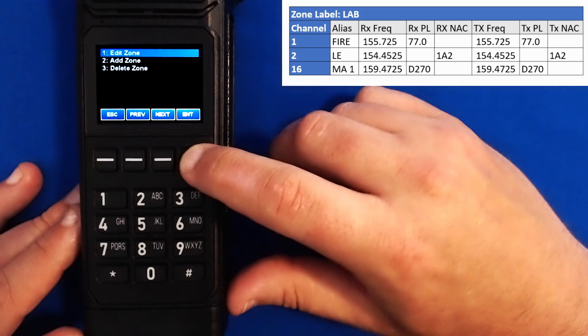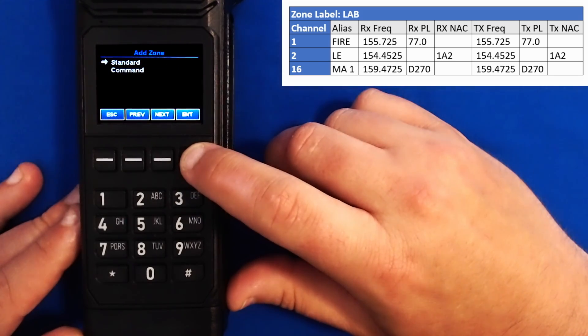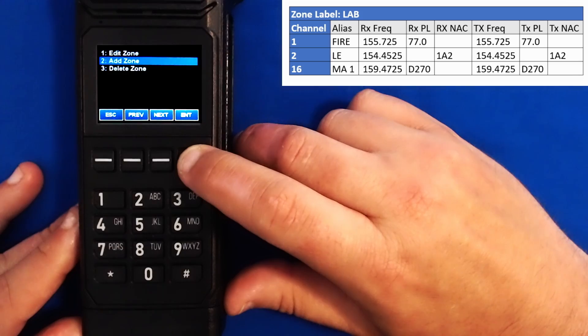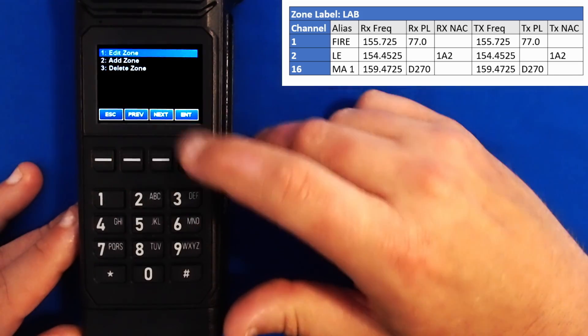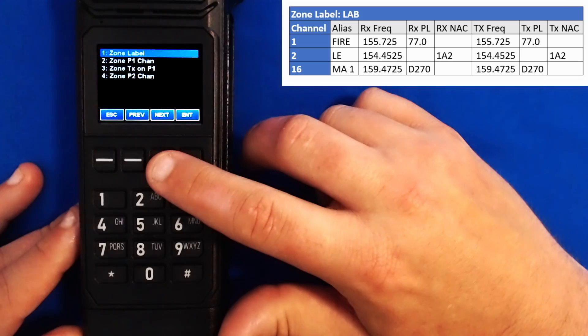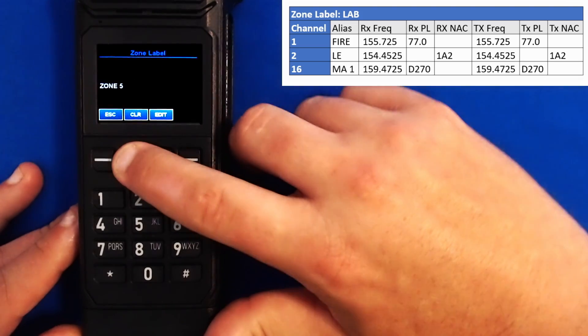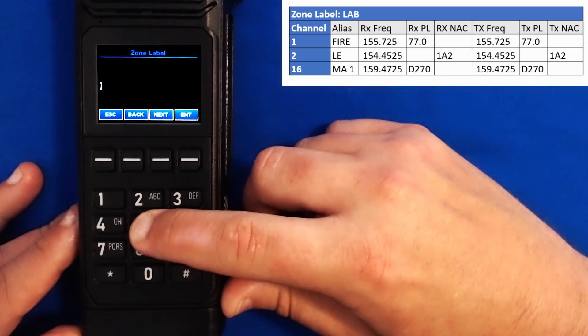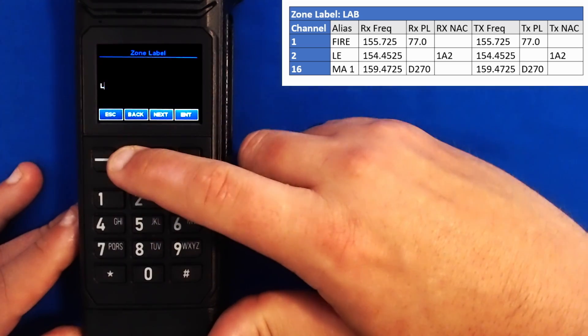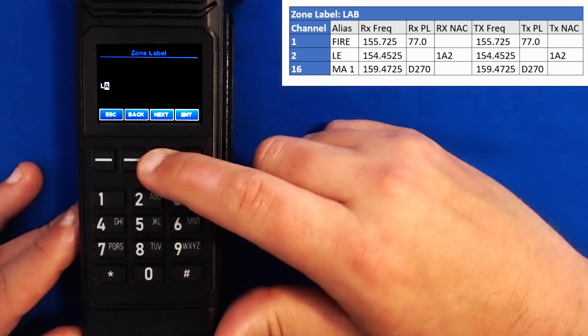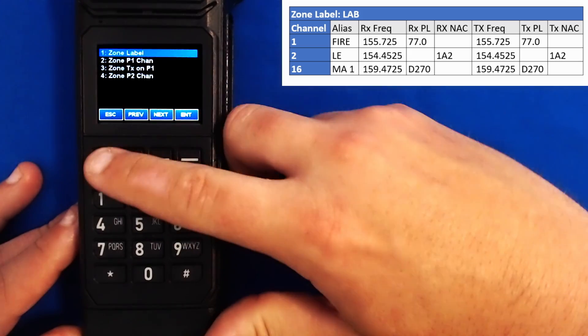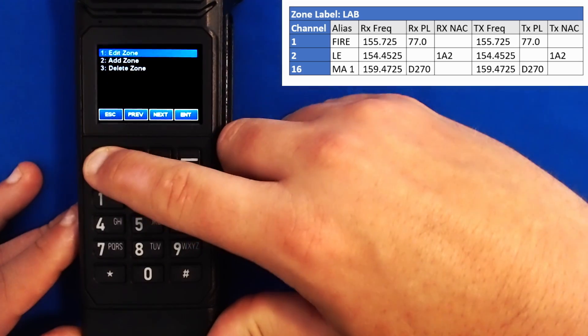We scroll to zone and press enter, scroll to add zone press enter, and now we're asked if we want to add a standard or command zone. In this case we want to add a standard zone. Zone 5 has been added. Let's edit the zone we just added. We go to edit zone press enter and then we scroll to the zone that we wish to edit. In this case zone 5. Here we're going to edit our label to match the label we've been assigned in our lab. We'll hit escape here, escape again, escape again.